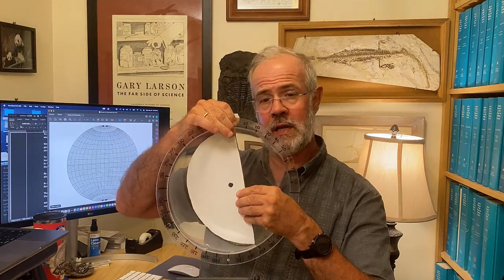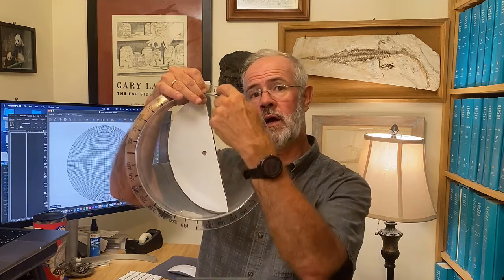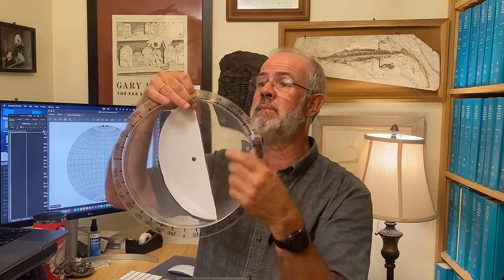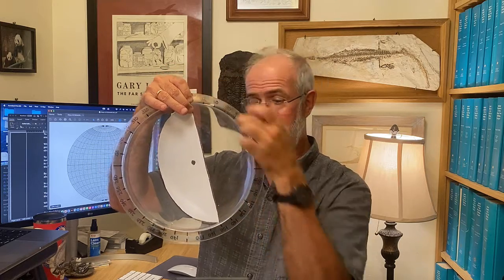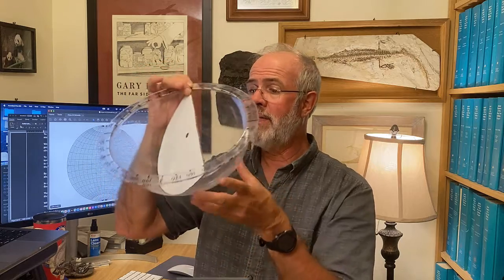And we can think of this piece of cardboard here as a plane that is dipping at some angle, and here is the strike line of that dipping bed that is defined by where these lines intersect the edge of the bowl.